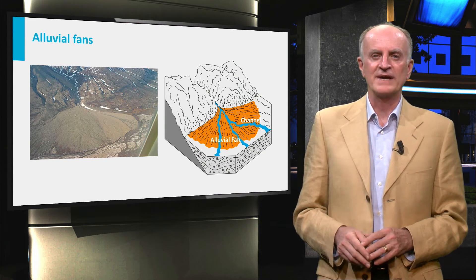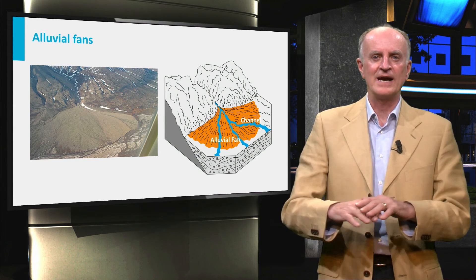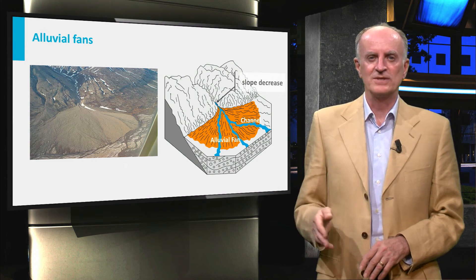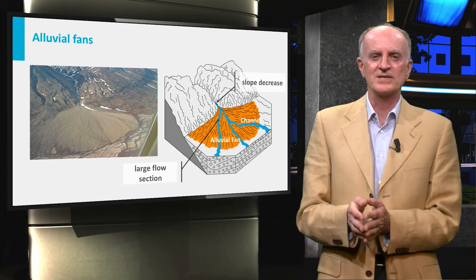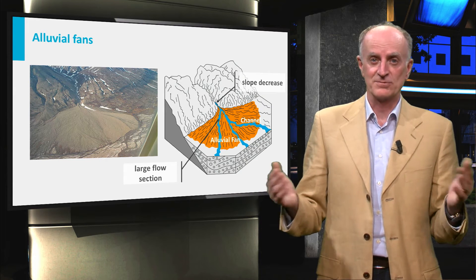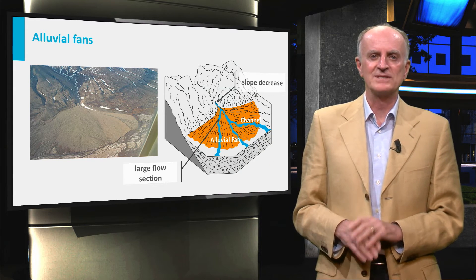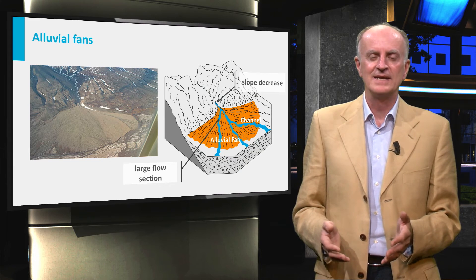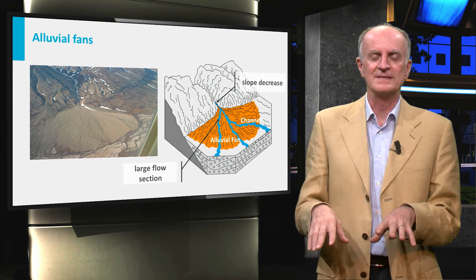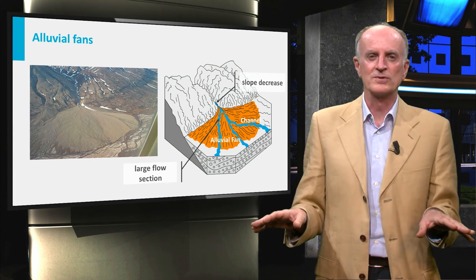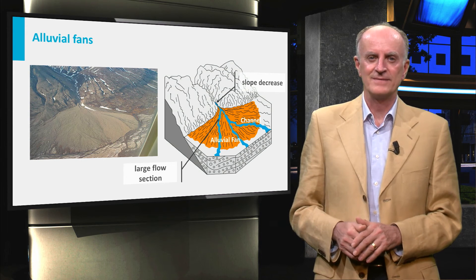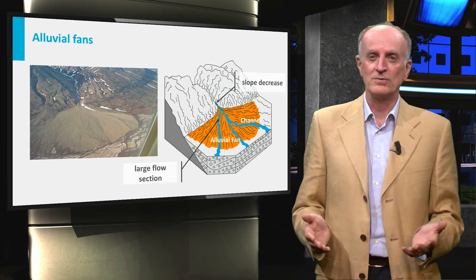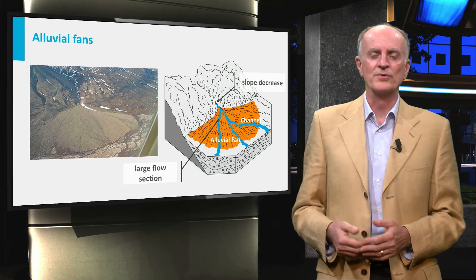A major change occurs when the river exits the steep part of the mountains and enters large valleys within the chain, or even the plains bordering the mountains themselves. At this transition, the slope of the river decreases substantially and the section within which the river can flow becomes very large. As a result, the rivers charged with water and sediments during periods of high precipitation experience a dramatic drop in velocity and correspondingly of carrying capacity, suddenly dumping most of the sediments they have. When floods pass, waters flow along non-perennial channels, locally cleaning the sediments. These systems are alluvial fans, sedimentary systems of great importance because on the whole they have large permeability, and are very advantageous for water and hydrocarbons.